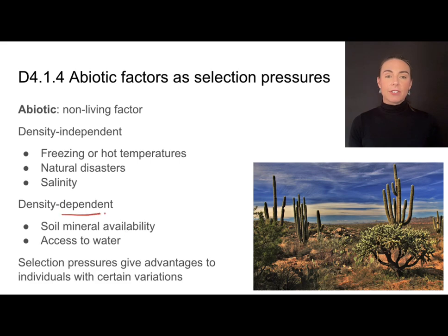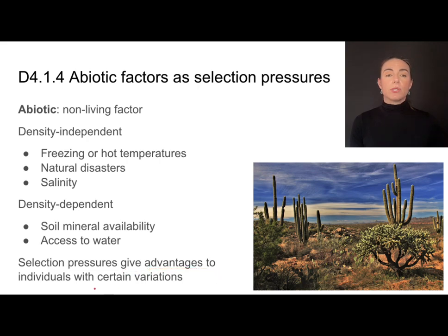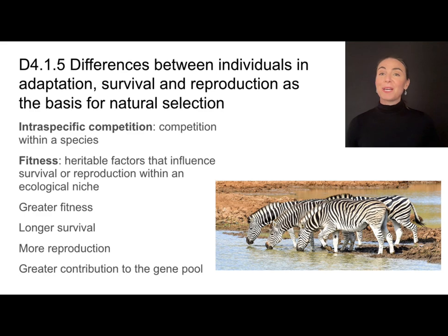Density-dependent factors do rely on the density of the population — how many organisms are living in a space at a time. Examples include the availability of minerals in a soil or access to water. With a greater density of population, these abiotic factors become more and more important. These selection pressures give certain individuals advantages, and individuals with certain variations will have advantages in their environment due to either density-independent or density-dependent factors. It all comes back to competition.